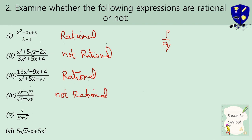The fifth expression is simple: 7 by x plus 7. It is already in P by Q form and there is no root involving the variable, so it is rational. The sixth expression has the fifth root of x minus x plus 5x squared. Since a variable value is under a root, this is not rational.